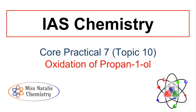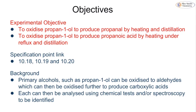This video is going to be looking at the last two core practicals for IAS chemistry for unit 3 of Edexcel's course. The first one we're going to be looking at is the oxidation of propan-1-ol, which is on topic 10. The objective of this experiment is to do two different oxidations: first to oxidize propan-1-ol to propanal, and then to oxidize propan-1-ol to propanoic acid, using two different methods.